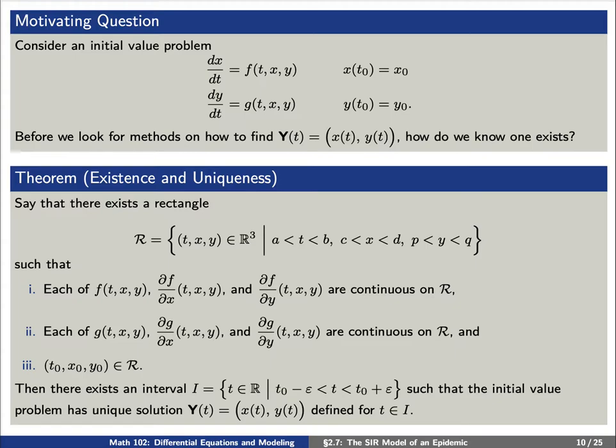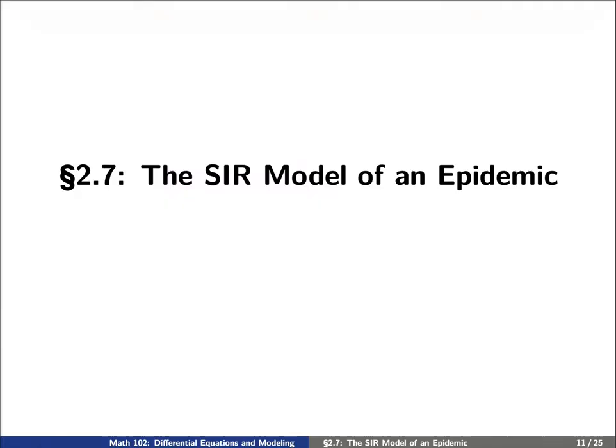Second, each of g, the partial of g with respect to x, and the partial of g with respect to y are continuous. And third, the point (t0, x0, y0) is also in this region. Then there exists an interval which consists of time t between t0 minus epsilon and t0 plus epsilon, such that the initial value problem has a unique solution defined for all time t in this interval.